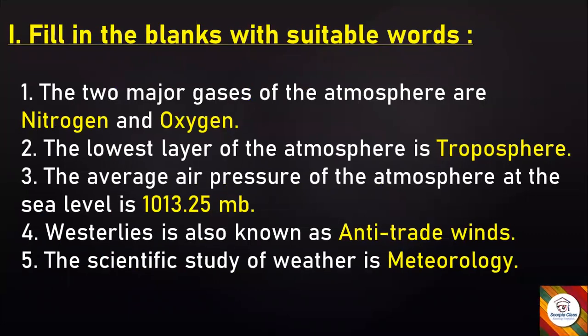Now let's get started with the notes. First main: Fill in the blanks with suitable words. The two major gases of the atmosphere are nitrogen and oxygen. The lowest layer of the atmosphere is the troposphere. The average air pressure of the atmosphere at sea level is 1013.25 mb. Westerlies is also known as anti-trade winds. The scientific study of weather is meteorology.